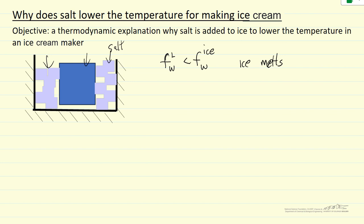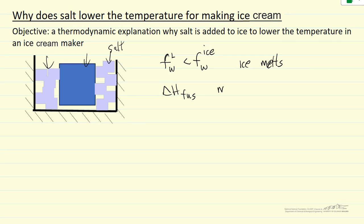The diagram shows insulation around the container, so to a first approximation it's an adiabatic system. When we melt ice we have to provide energy — we have to provide the enthalpy, or heat of fusion. So we have to put energy in, and since it's insulated, that energy has to come from the contents of the container.